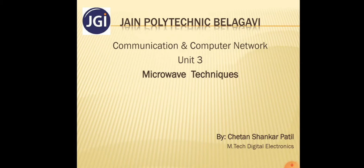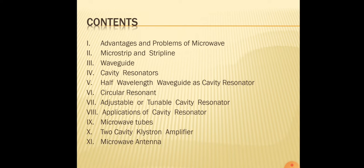Hello friends, today we will be studying about the topic microwave techniques, that is Unit 3 of Communication and Computer Networks for students of electrical and electronics diploma. The contents we will be studying are: advantages and problems of microwave, microstrip and strip line, waveguide, cavity resonator, half wavelength waveguide as cavity resonator, circular resonant, adjustable or tunable cavity resonator, applications of cavity resonator, microwave tubes, two cavity klystron amplifier, and microwave antenna.